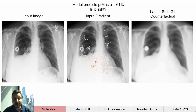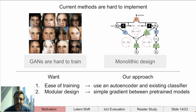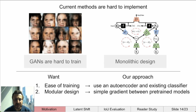However, generating counterfactuals is very difficult, as existing methods are hard to implement. They often require GANs, which can be very difficult to train, or they are monolithic and require joint training with the classifier. Our approach aims to address both of these issues.